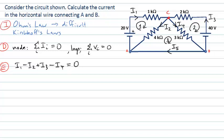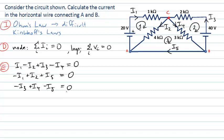I can do a similar thing at node A: I1 will be leaving that node, so minus I1; I2 is entering, so plus I2; and I5 is also entering, so plus I5. That gives −I1 + I2 + I5 = 0. And finally at node B, I have I3, I4 and I5 with appropriate signs: −I3 + I4 − I5 = 0. Those are my three node equations.